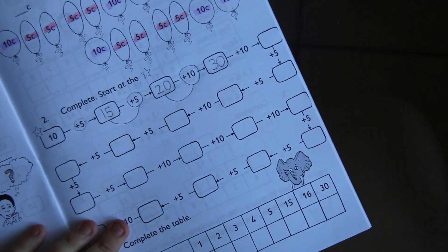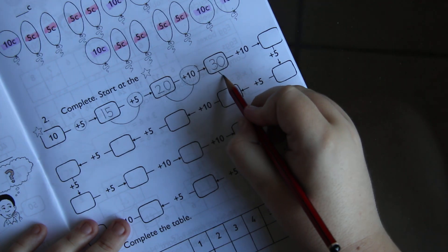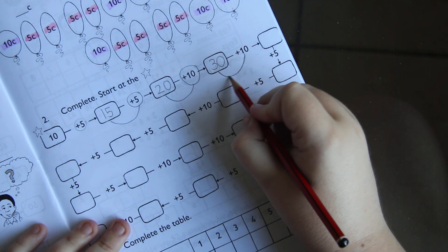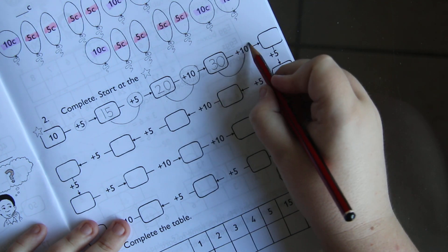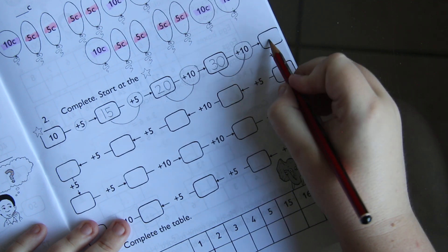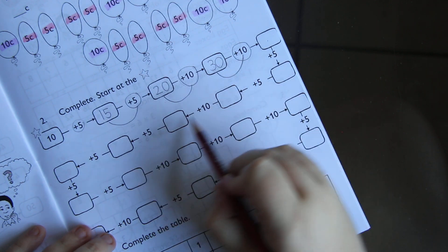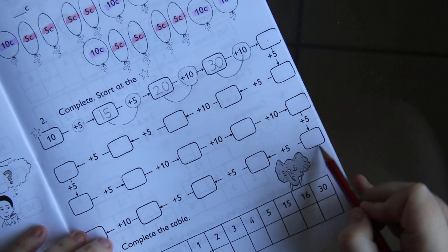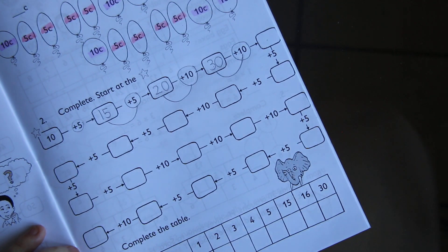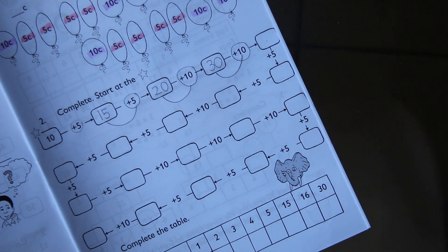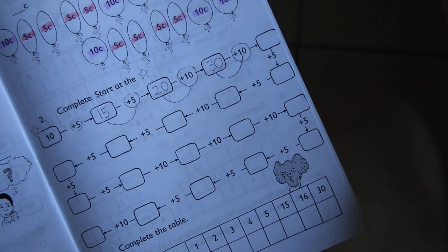So each time you are just jumping from this number and adding those two numbers together. Then you're writing your answer in the square. Remember to follow the lines like a snake all the way down. So same like our coins, we are counting in 10s and 5s.